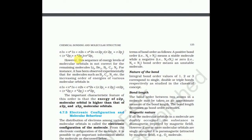The full molecular orbital energy order is: sigma 1s, sigma star 1s, sigma 2s, sigma star 2s, sigma 2pz, pi 2px equal to pi 2py, pi star 2px equal to pi star 2py, sigma star 2pz. We must learn this order carefully to avoid confusion.